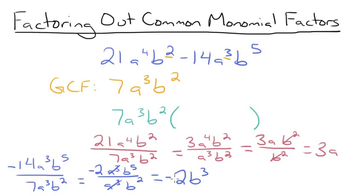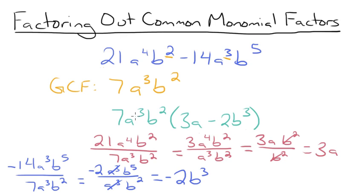If you did miss the negative sign, you can always check your original expression and add it in. Just be careful with negative signs because they can be tricky and easy to forget. So now we have 3a minus 2b cubed, and that's what goes inside our parentheses — giving us 7a cubed b squared times (3a minus 2b cubed) as our factored form. If you distribute back into the parentheses, you would get the original expression, which is a good way to double check your answer.